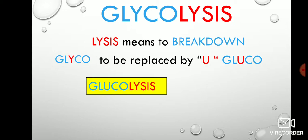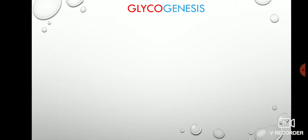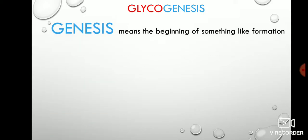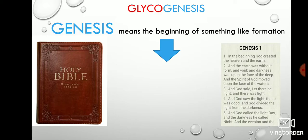Now we'll look at the term 'genesis'. For people studying biochemistry for the first time, the meaning of genesis can be tough to understand. Genesis means the beginning of something — formation, or 'to come into being'. We all know the Holy Bible, the most read book in the world. Its first chapter is called Genesis, where it begins: 'In the beginning, God created the heaven and earth.' So genesis means formation or beginning.